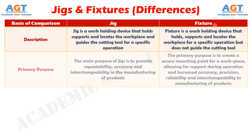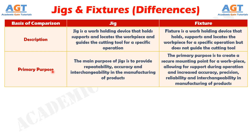If we differentiate them based on their primary purpose of use, the main purpose of using jigs is to provide repeatability, accuracy and interchangeability in the manufacturing of products. Whereas the primary purpose of using fixtures is to create a secure mounting point for a workpiece, allowing for support during operation and increased accuracy, precision, reliability and interchangeability in manufacturing of products.